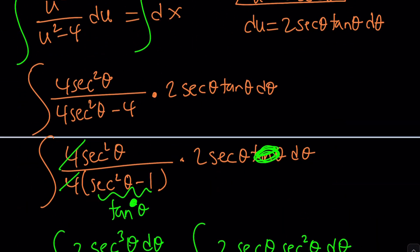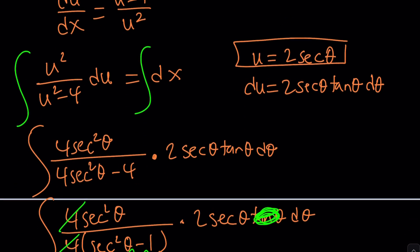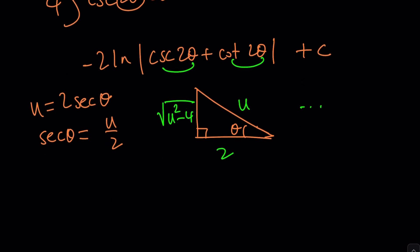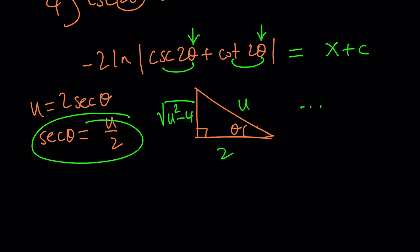Oh, by the way, I forgot to say this is not equal to a constant — it's equal to dx. So this should equal x plus c, with the constant on the right-hand side. Once you do the integration, you're going to be able to get the answer. You already got the answer in terms of theta, but once you replace cosine and cosecant and cotangent in terms of u, and then do the substitution u equals x minus y, you're going to get the solution in terms of x and y.